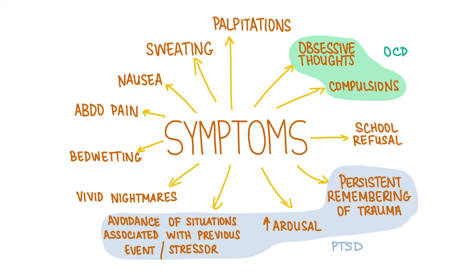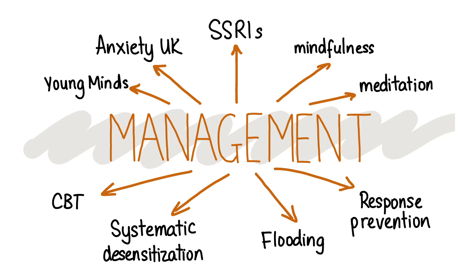One anxiety disorder unique to children is separation anxiety. Separation anxiety is normal from six months to three years but abnormal if it persists beyond the age of three. It describes when anxiety manifests solely on separation from attachment figures and resolves when their primary carer is around. Children can present with physical symptoms including abdominal pain and bed wetting, but also with school refusal or vivid nightmares of separation. Anxiety disorders in children if mild can be managed at home. Signpost patients to the Young Minds website as well as Anxiety UK, which are self-help and educational resources for parents and children.